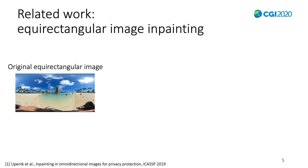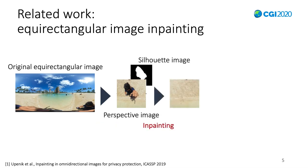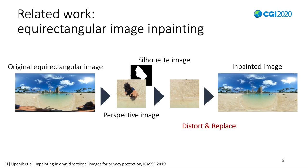Firstly, I'd like to introduce an image inpainting method in 360-degree contents. The image is expressed by an equirectangular image. Equirectangular images consist of latitude and longitude. Because equirectangular images have a distortion, an area around the target is cropped and undistorted first. This normal image, which has no distortion, is called a perspective image. With its estimated silhouette, the target is removed — this removing process is called inpainting. Finally, the original area is replaced with this cropped and inpainted image, which has already been distorted.